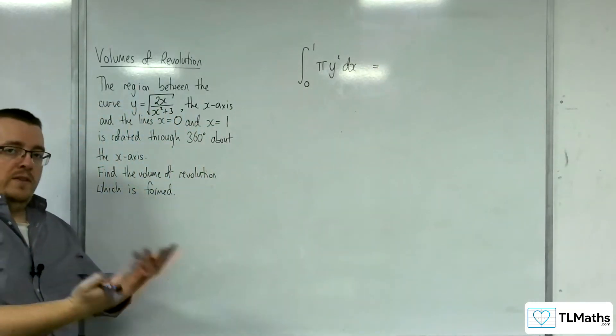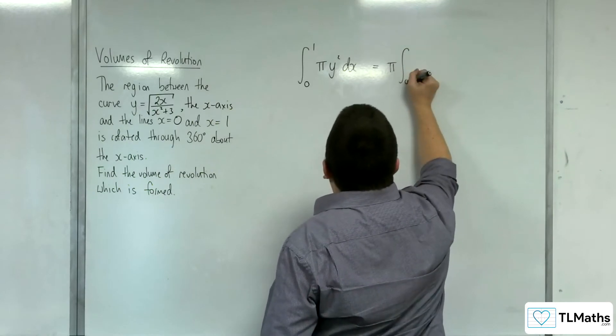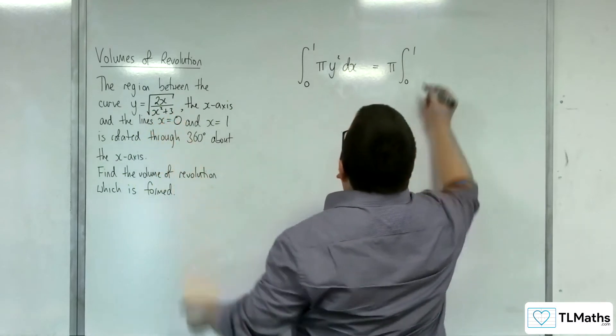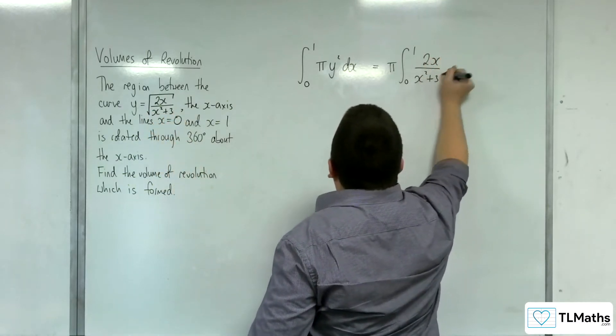I'm going to bring the pi outside of the integral. Now, y squared, I'm just going to lose that square root. So I'm going to have 2x over x squared plus 3 dx.